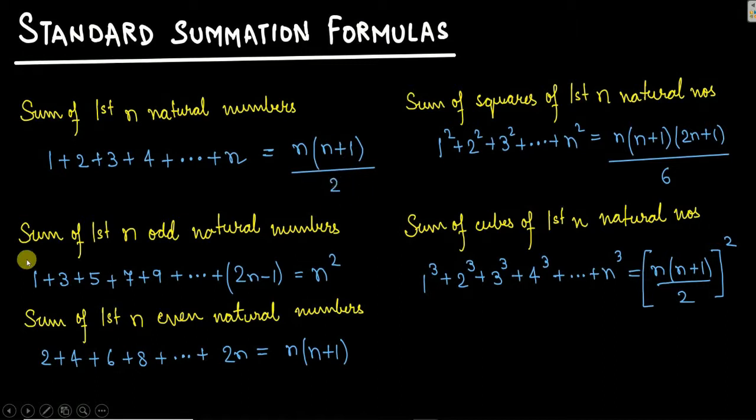Sum of first n odd natural numbers you'll get as 1 plus 3 plus 5 plus 7 plus 9 and so on. So the last term will be 2n minus 1 will be equal to n squared. Let's say if you want to find the sum of first three odd natural numbers. First three odd natural numbers are 1, 3 and 5. If you add these: 1 plus 3 is 4 plus 5 is 9. So you got the answer as 9. You can solve this by substituting this formula as well. n value is 3. Put here n is equal to 3. 3 squared is 9. So you're getting the value as 9 by this formula.